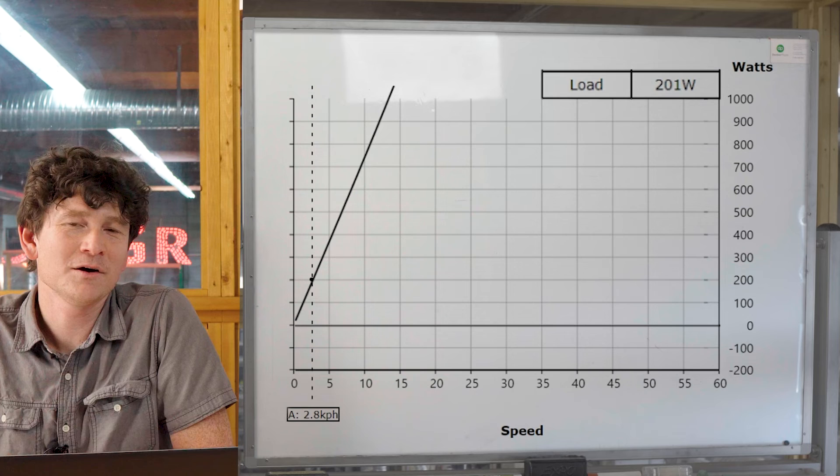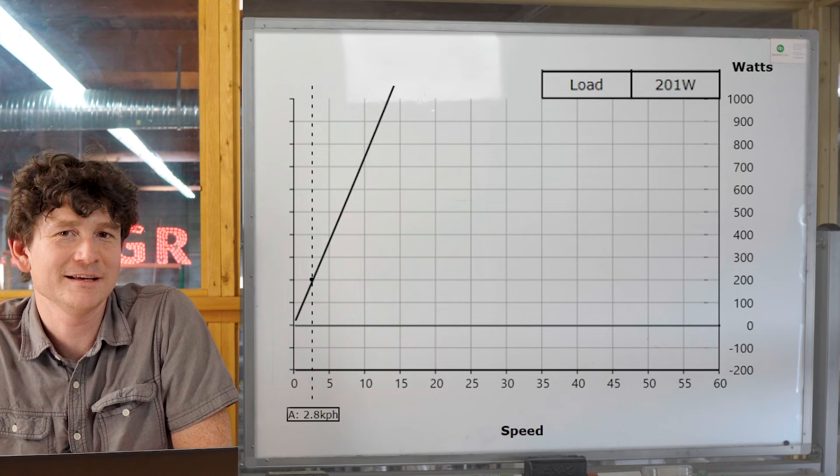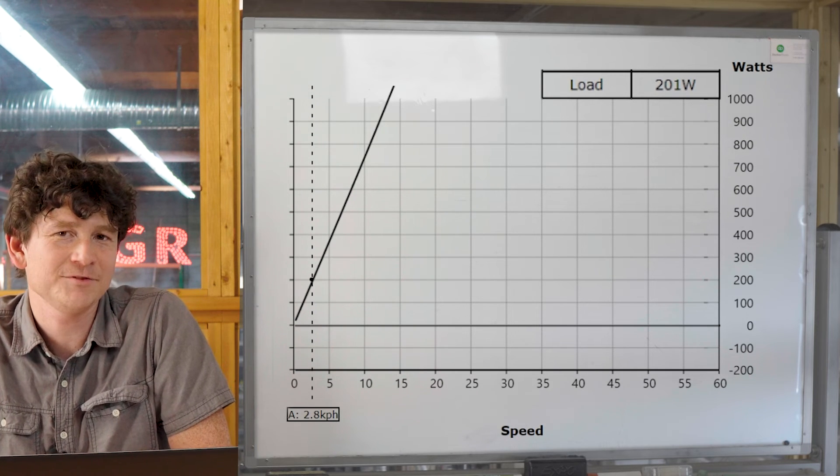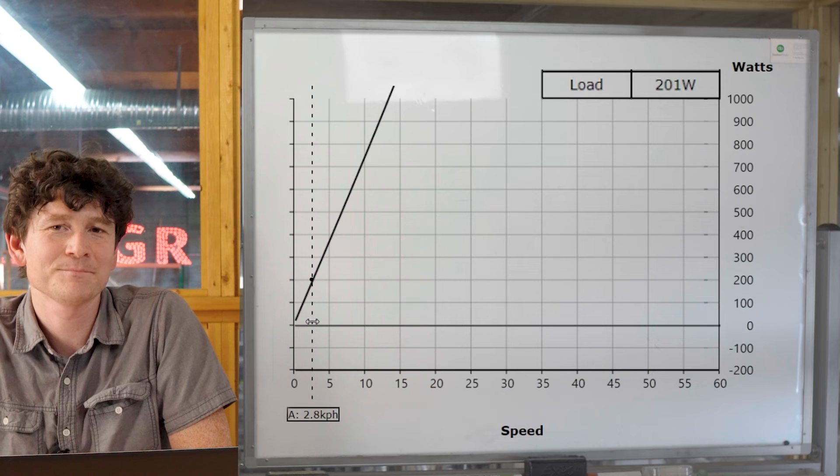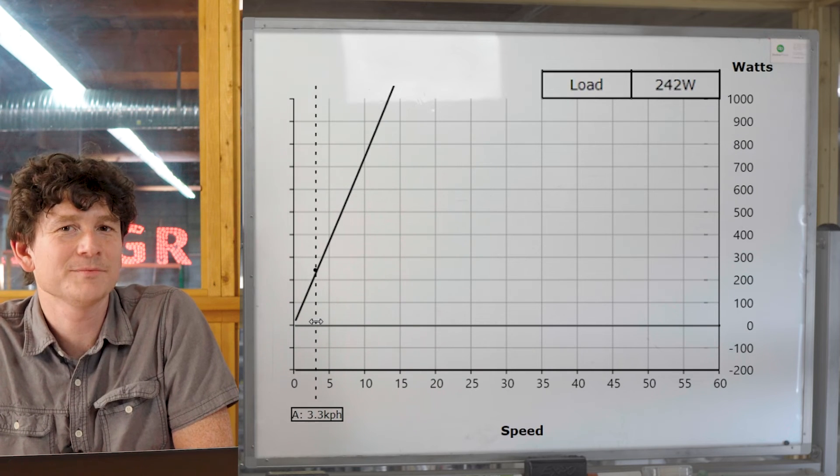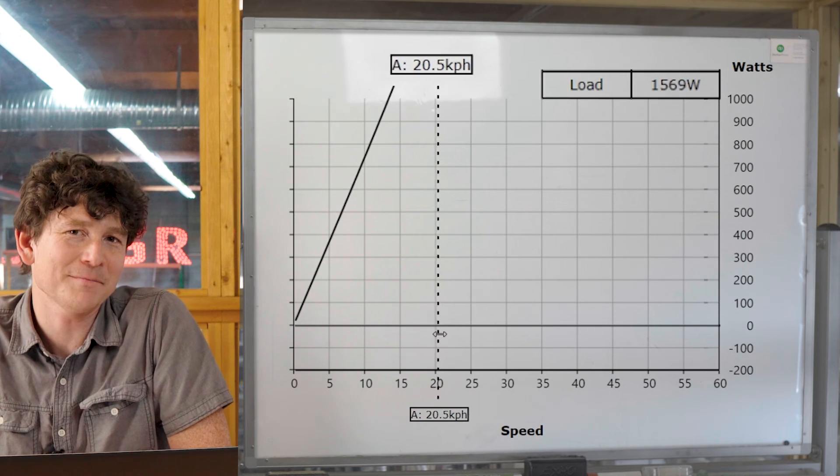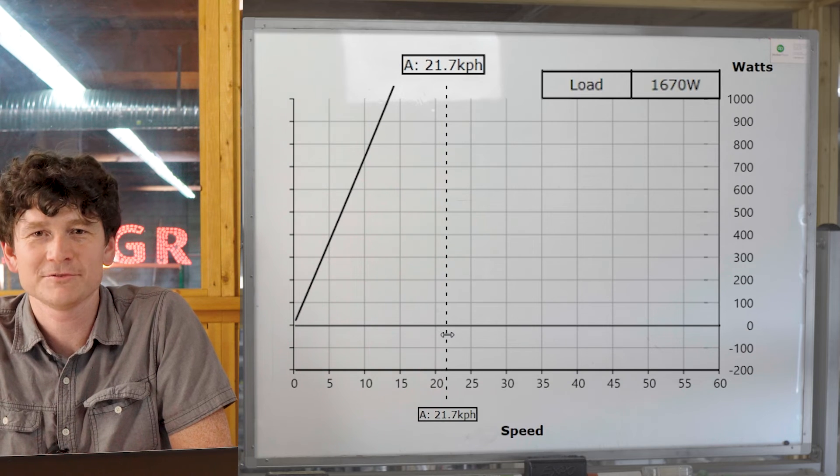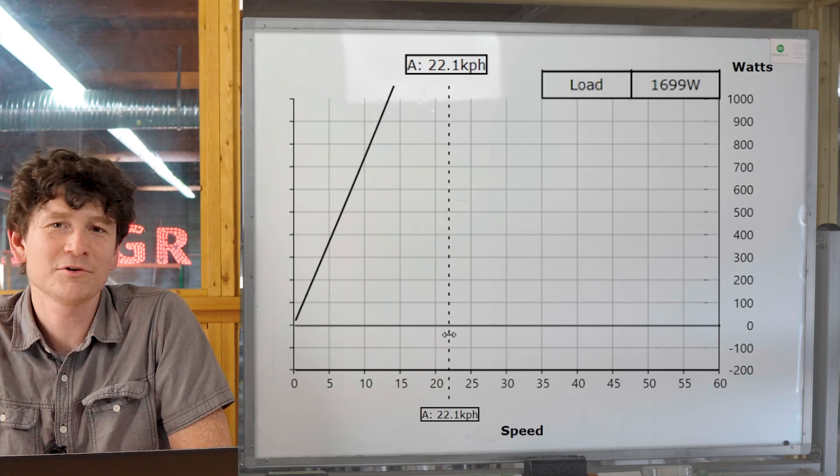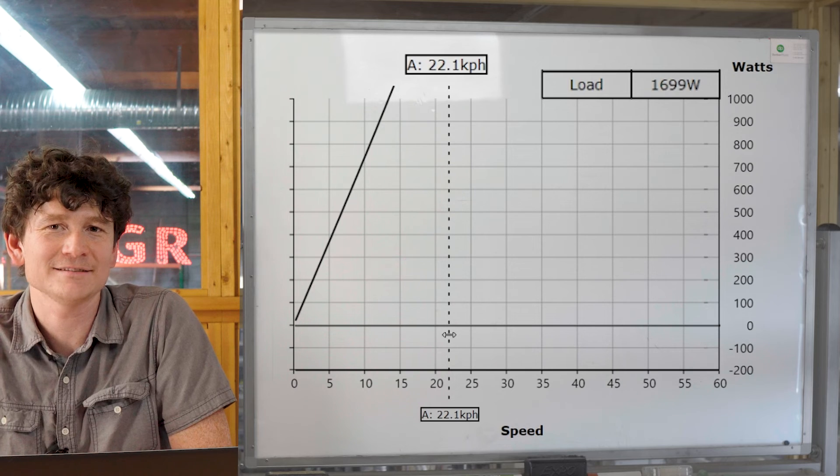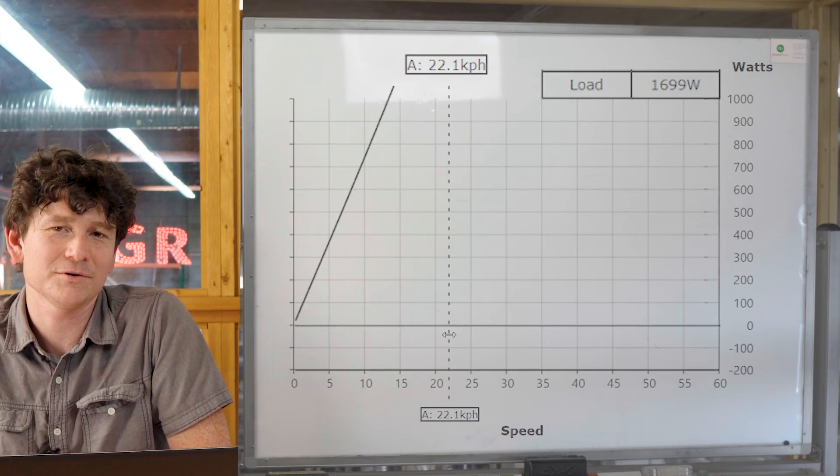Let's say this cargo bike rider wanted to climb that 10% grade hill at that same comfortable safe speed of 22 kilometers an hour. In addition to the 200 watts from their legs, they're going to need to somehow muster another 1500 watts of power from some other source in order to maintain the same speed that their legs could do on the flats, for 1700 watts in total.